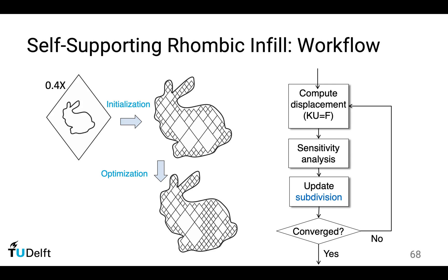The optimization principle is comparable to standard topology optimization. The difference is that the design variable is different. In standard topology optimization, the design variable is the material per element, whereas here the design variable is the subdivision of each individual cell.